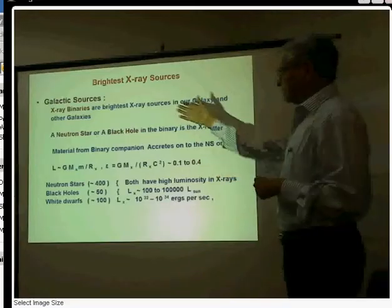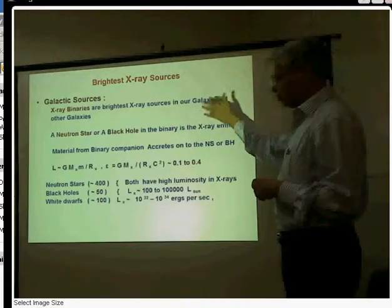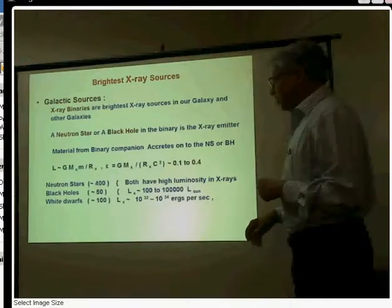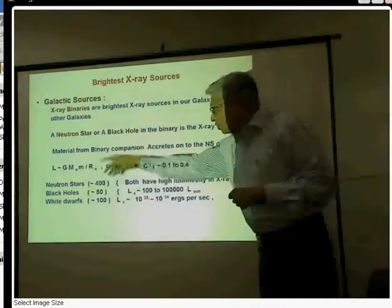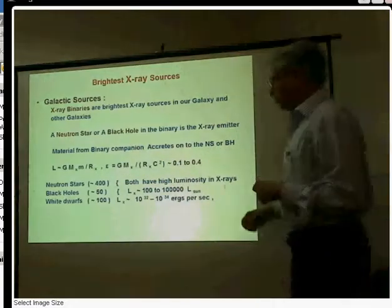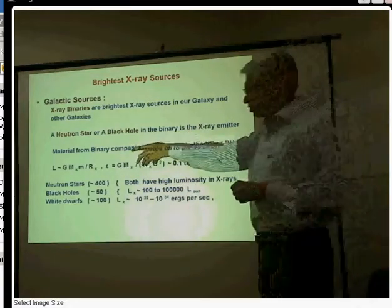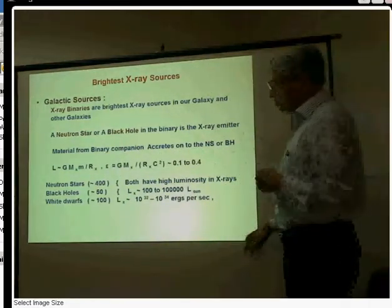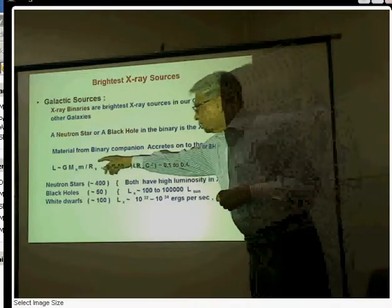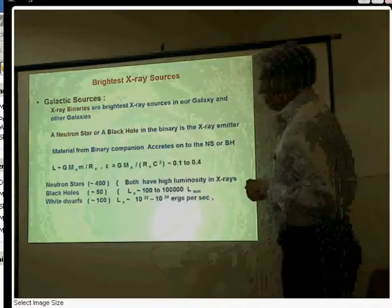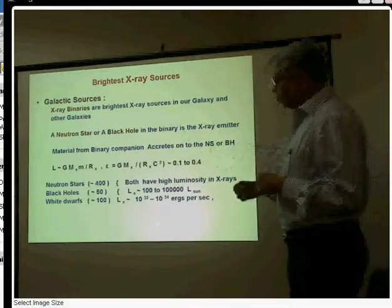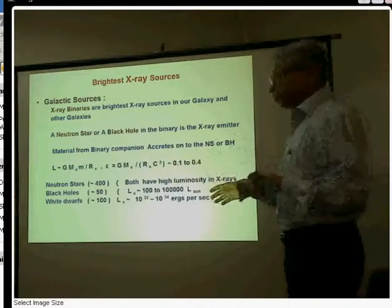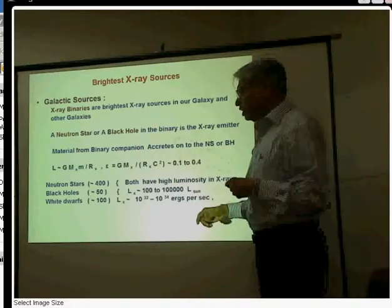Now let's look at the important sources of X-rays. In our galaxy, there are X-ray binaries — the brightest sources, as in the case of Scorpius X-1 — where neutron stars and black holes in binary systems are powerful X-ray emitters. The luminosity of an X-ray source depends on the gravitational constant, the mass of the X-ray emitting compact object (neutron star or black hole), its radius, and the mass accretion rate. Because the mass of a neutron star is about the mass of the Sun while the radius is only 10 to 15 kilometers, the gravitational potential GM/R is extremely high.